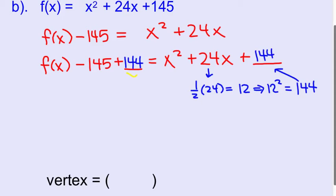Now I'm going to combine these two terms together. Negative 145 plus 144 is negative 1. And then I have this f of x still over here on the left. Equals. And then on the right, I have x squared plus 24x plus 144. That is now factorable.